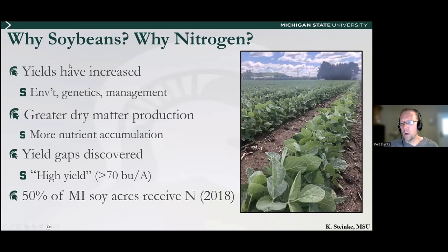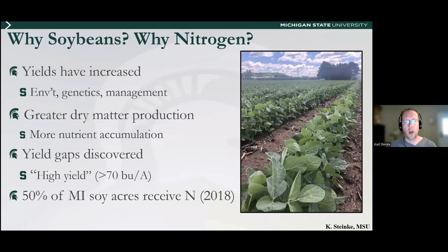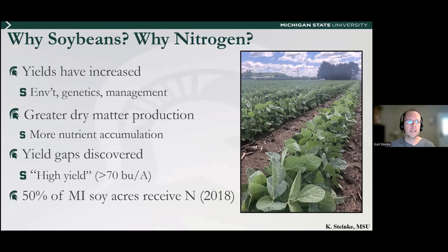Why soybeans and why nitrogen? Yields have increased — not quite as much in soybeans as we've seen in corn and wheat, but reasons include environmental factors, genetics, variety selection, and better management. One key difference in soybeans today versus a decade or two ago is greater dry matter production. What drives nutrient uptake? It's dry matter. We can see five- to six-foot-tall soybeans more commonly today, and as you produce more biomass, you accumulate more nutrients — which brings us back to the question of yield gaps.